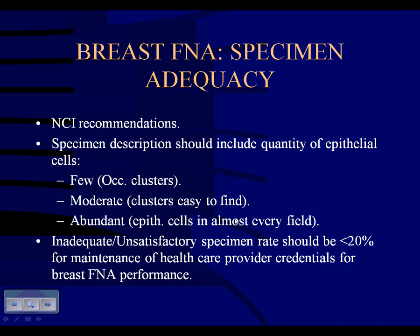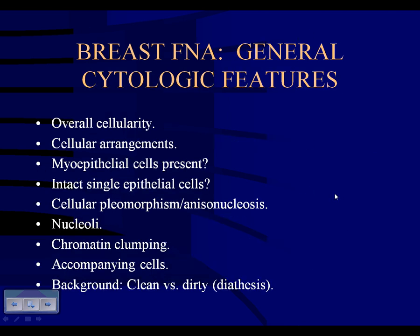At BAMC, I like to see about six or seven well-preserved groups of ductal cells. If it's less than that, it's not adequate. When I call it unsatisfactory, I tell them why — is it because of the cells, or is it degenerated? The NCI group recommends that the specimen description should include quantity of epithelial cells: few, moderate, or abundant. We try to keep the inadequate or unsatisfactory specimen rate less than 20%, which is the NCI recommendation for maintenance of healthcare provider credentials.